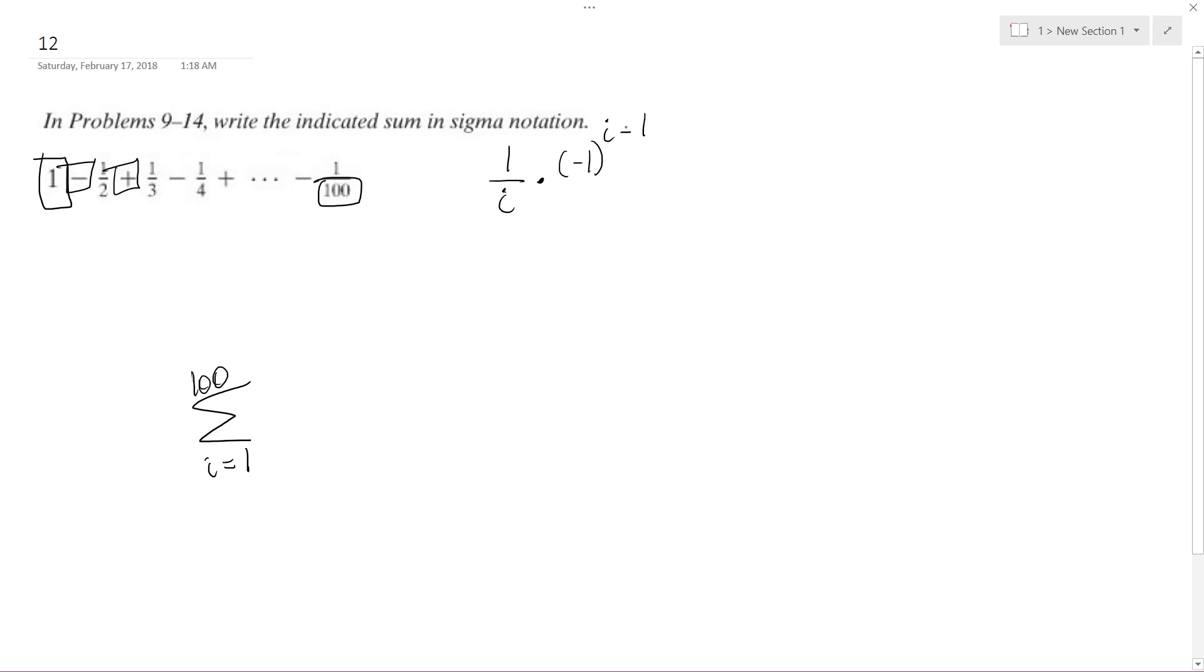Anything raised to 0 is... if we have 1, anything raised to 0 is 1. If we have 2, it's negative. If we have 3, it's positive. So in this instance, we're going to have negative 1 raised to i minus 1 over i.